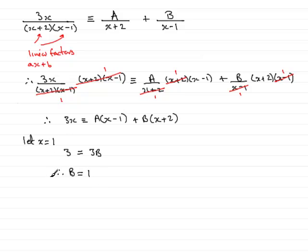Now I could get A by making this bracket 0, and that would be by choosing x to be minus 2. Minus 2 add 2 would be 0. So if I let x be minus 2, over here we've got 3 times minus 2 now, so that's going to be minus 6. And that's going to equal minus 2 minus 1, which is minus 3. And so that's going to give me minus 3A. And if I divide both sides by minus 3, I've got minus 6 over minus 3, leading to A being 2.